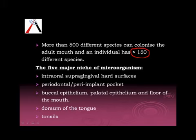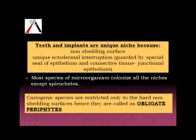The five areas where microorganisms colonize are: the intraoral supragingival hard surfaces, that is teeth and implants; we have the pocket, which could be periodontal or peri-implant pocket; we have the epithelial surfaces; we have the dorsum of the tongue; and we have the tonsils.